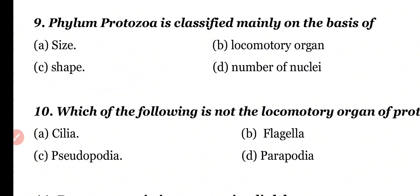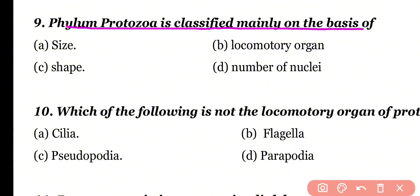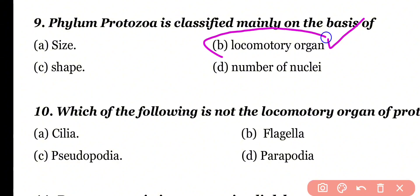Question number 9: Phylum Protozoa is classified mainly on the basis of — size, locomotory organ, shape, or number of nuclei? Correct answer is option B. Phylum Protozoa is classified into different classes on the basis of locomotory organ.